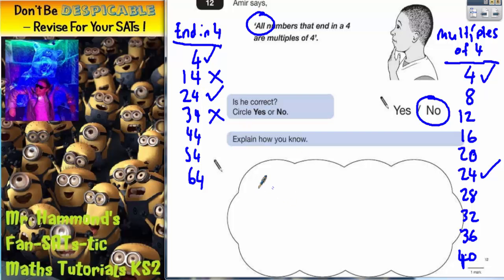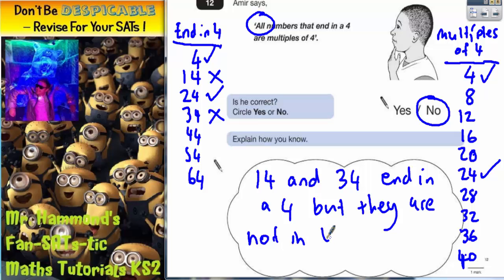So explain how you know. You can say this: 14 and 34 end in a 4, but they are not in the 4 times table.